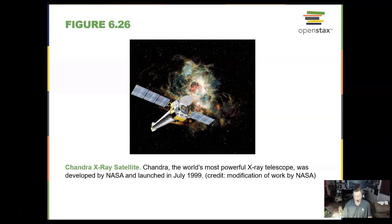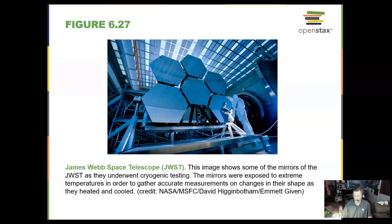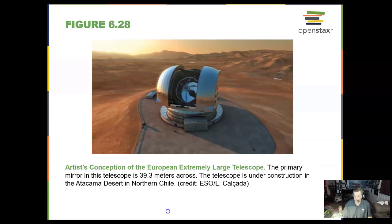The Chandra X-ray satellite does the same thing, but for X-rays. And then coming up in 2021 is the James Webb Space Telescope to be launched, going through some very rigorous testing right now. And then the European Extremely Large Telescope will be almost 40 meters across and is currently under construction in Chile.